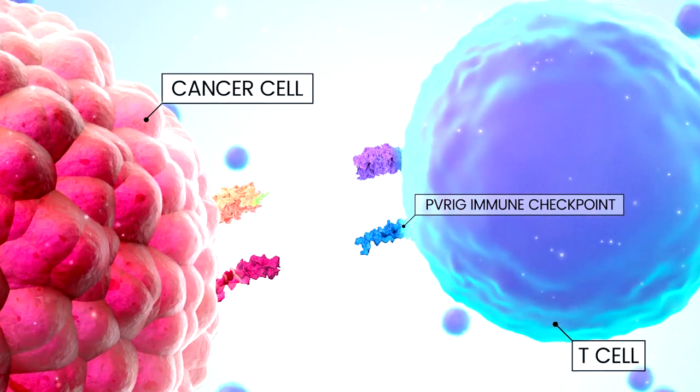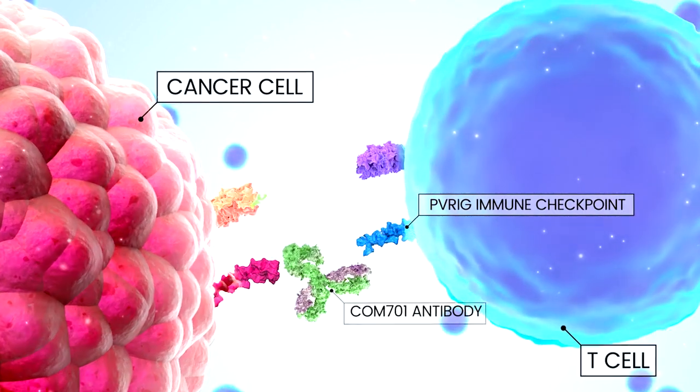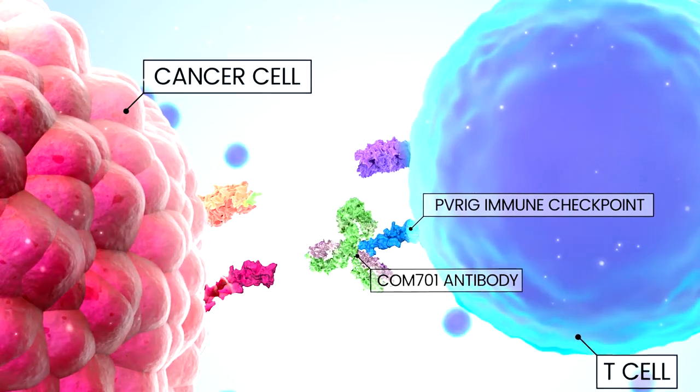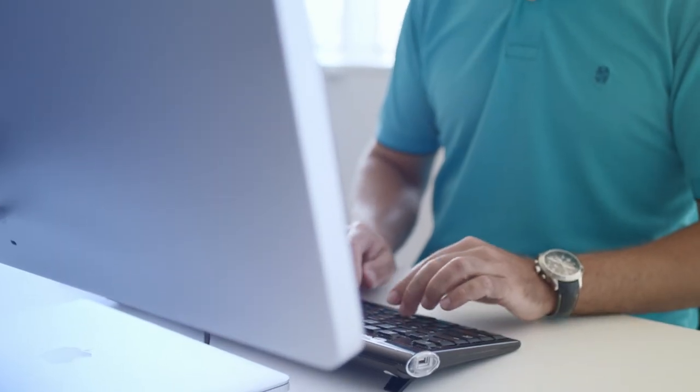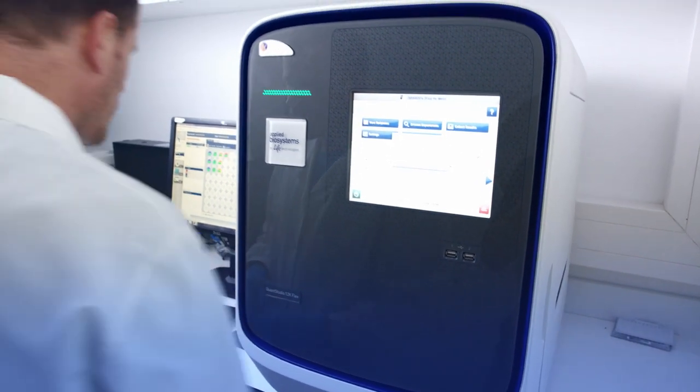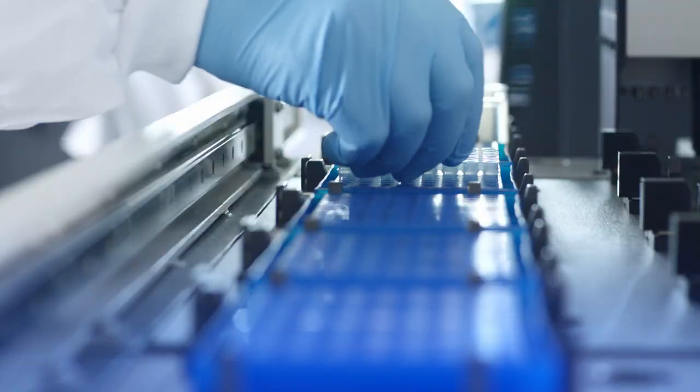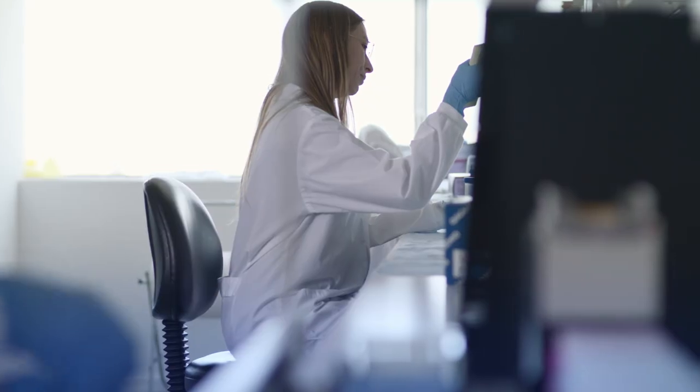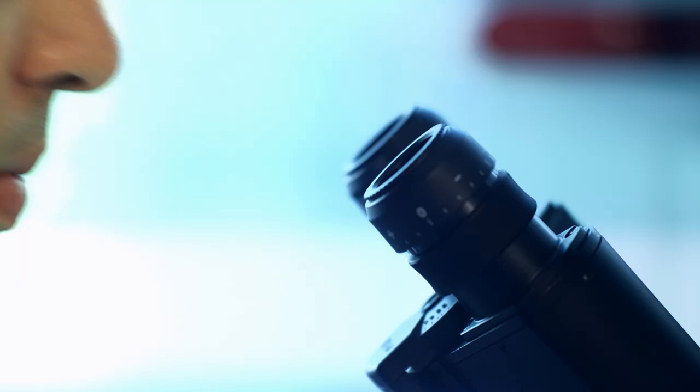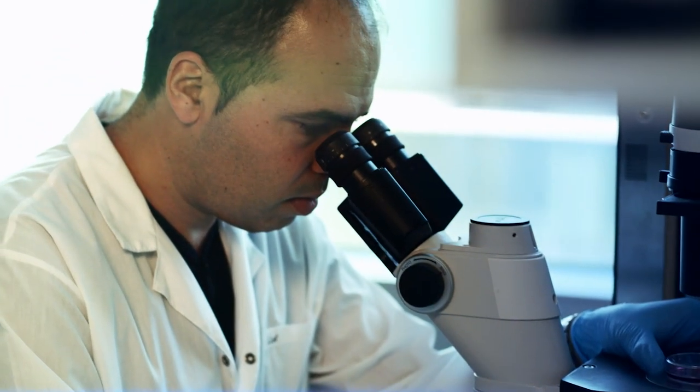One example is our COM701 antibody targeting the novel PVRIG receptor, which we identified using our computational models. Preclinical data for COM701 demonstrate its potential for monotherapy and combination therapies with COM902, our TIGIT antibody, and with PD-1 inhibitors, potentially offering opportunities for treating patients who are resistant to other therapies.